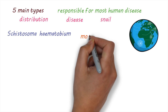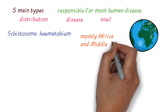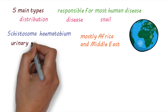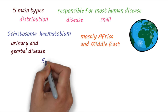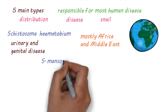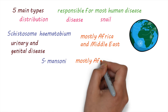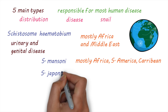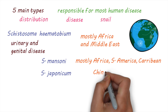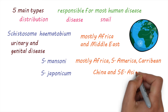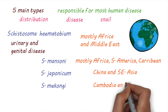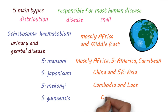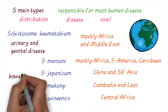Haematobium is mostly found in parts of Africa and the Middle East, and causes disease in the urinary and genital areas. Mansoni are mostly found in Africa, South America, and the Caribbean. Japonicum is found in parts of China and Southeast Asia, Mekongi in Cambodia and Laos, and Guineensis in Central Africa. These latter species affect mainly the bowel and liver.